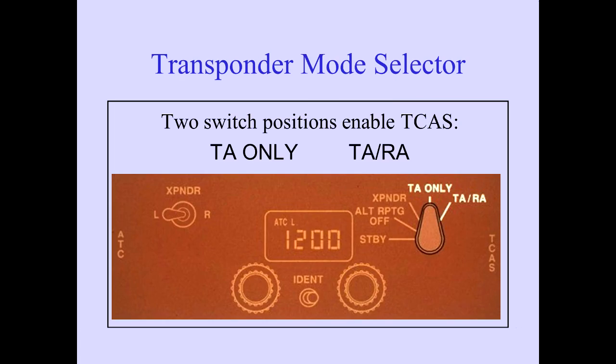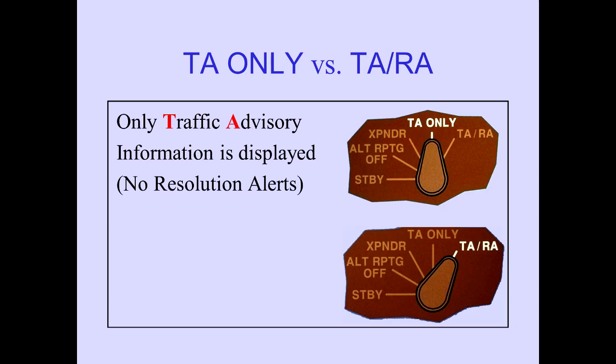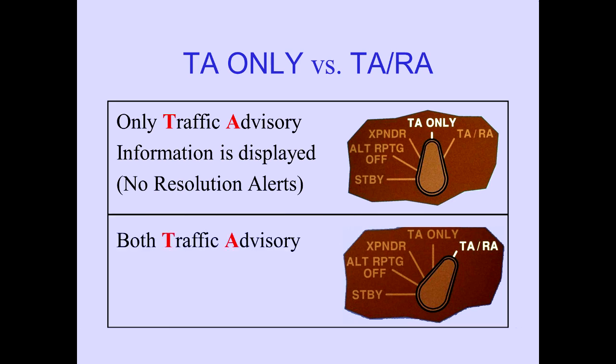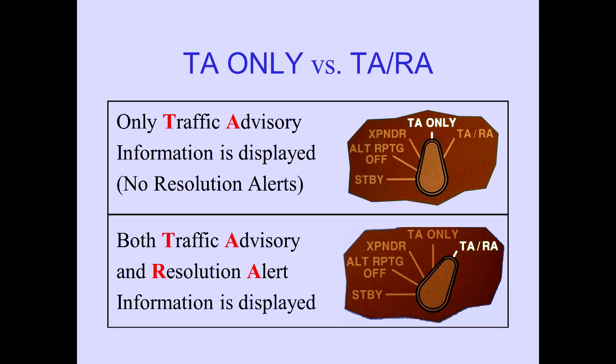Two positions of the transponder mode selector, TA only and TA/RA, provide inputs to the TCAS computer for processing and display. When TA is selected, only TA information is displayed. Selecting TA/RA provides both advisories for display and annunciation.